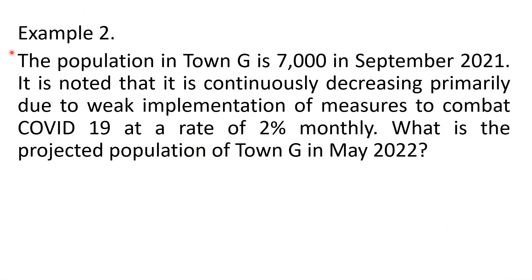Example 2. The population in Town G is 7,000 in September 2021. It is noted that it is continuously decreasing, primarily due to weak implementation of measures to combat COVID-19 at a rate of 2% monthly. What is the projected population of Town G in May 2022?